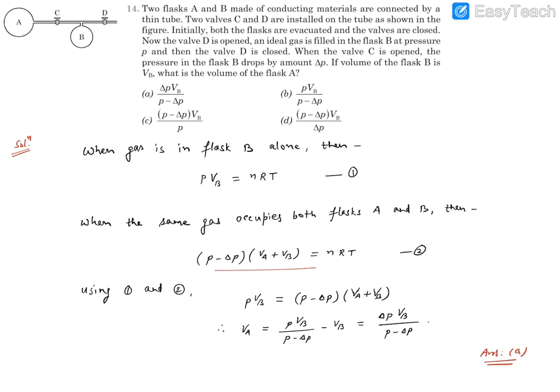Now using relation one with relation two, we can say since right-hand sides are identical, so left-hand sides should also be identical. This will say PVB equals P minus delta P times VA plus VB.